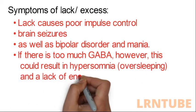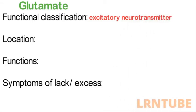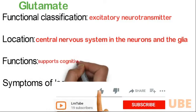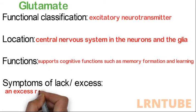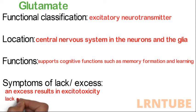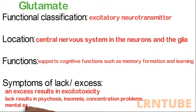Glutamate is an excitatory neurotransmitter found in the central nervous system, in neurons and glial cells. Its functions support cognitive processes such as memory formation and learning. An excess of glutamate can result in excitotoxicity, meaning neurons are killed due to over-activation of glutamate receptors, which can lead to conditions such as Alzheimer's disease, stroke, and epilepsy. Too little glutamate can result in psychosis, insomnia, concentration problems, mental exhaustion, or even death.